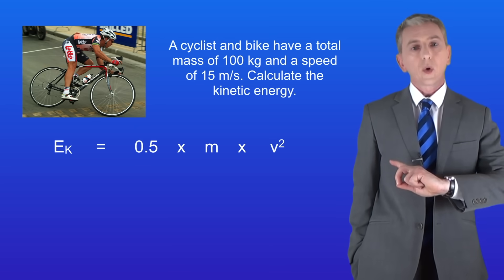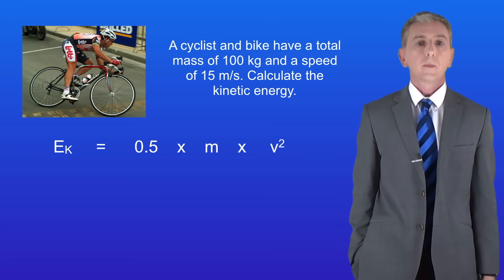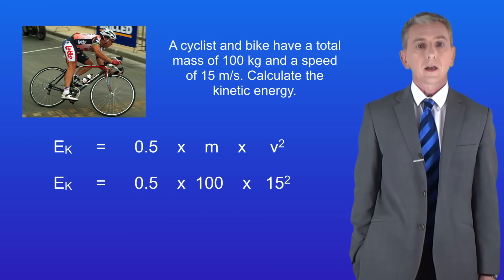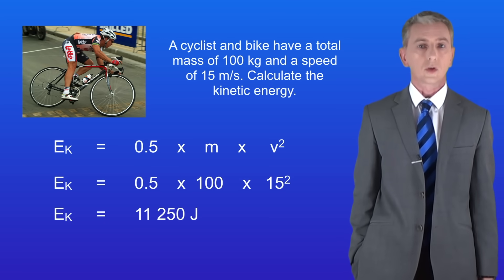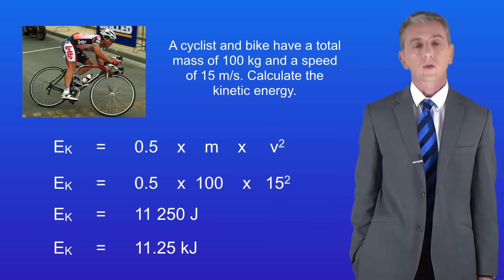Okay so here's the equation and remember you need to learn this. Kinetic energy is 0.5 multiplied by the mass multiplied by the speed squared. The mass is 100 kilograms and the speed is 15 meters per second. Putting these numbers into the equation gives us a kinetic energy of 11,250 joules. Dividing this by 1000 gives us 11.25 kilojoules.